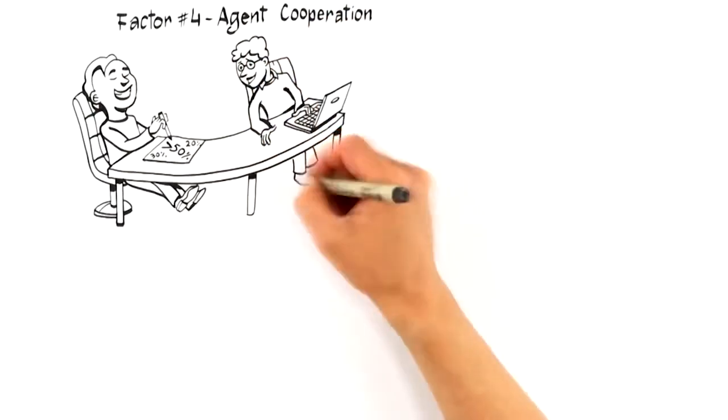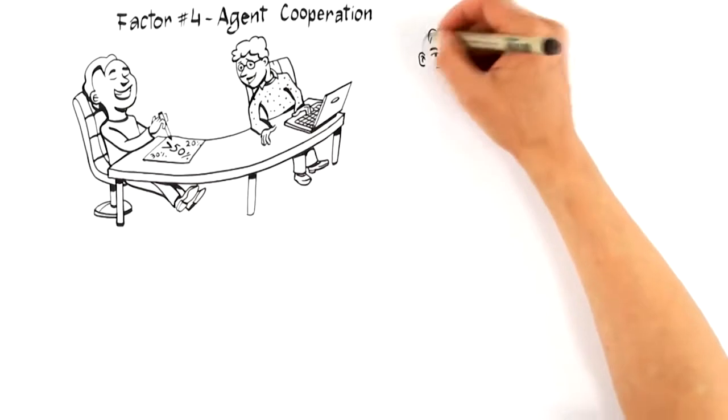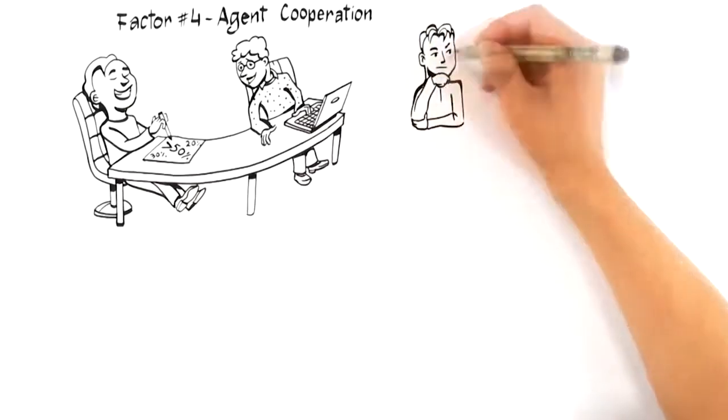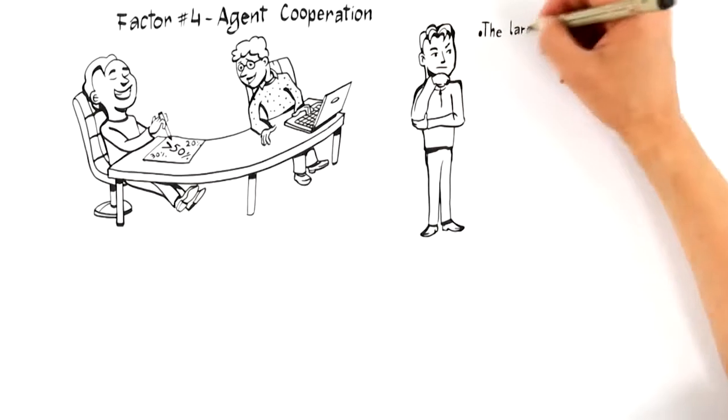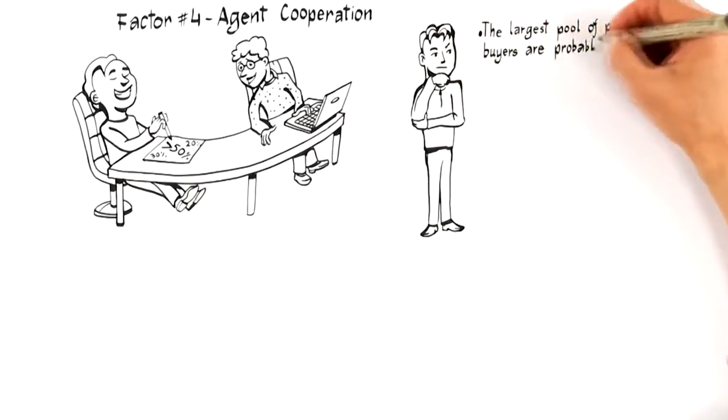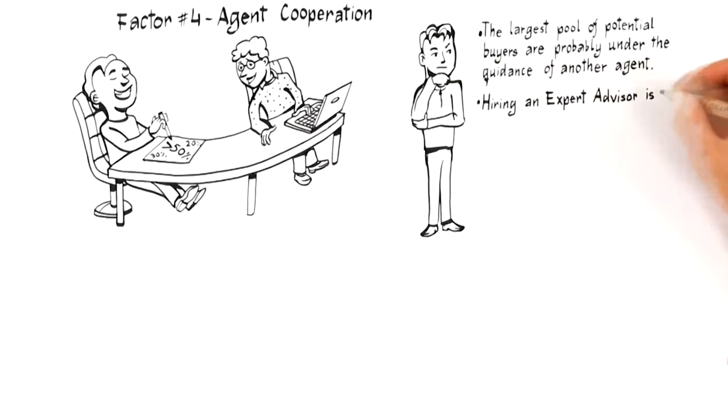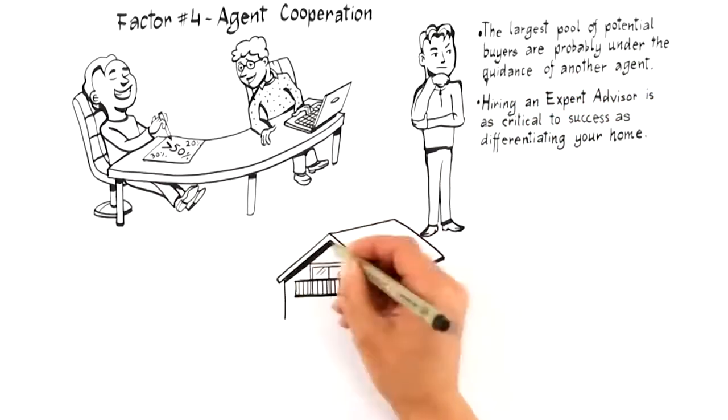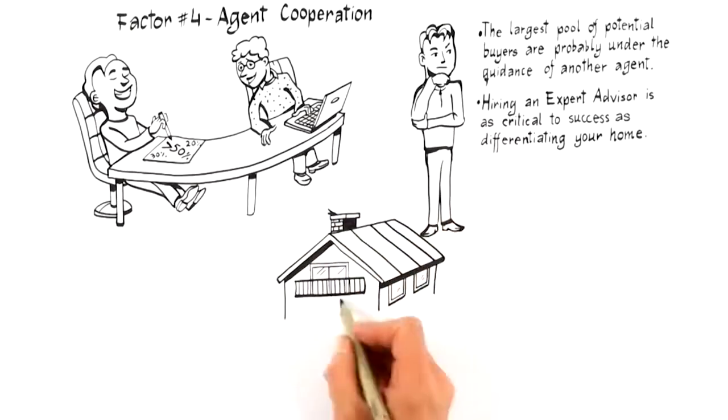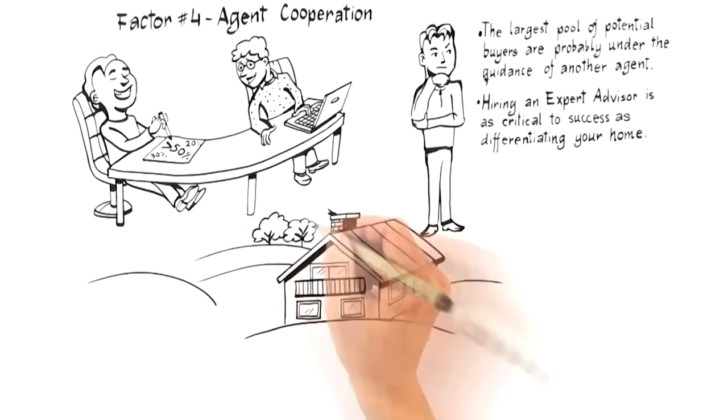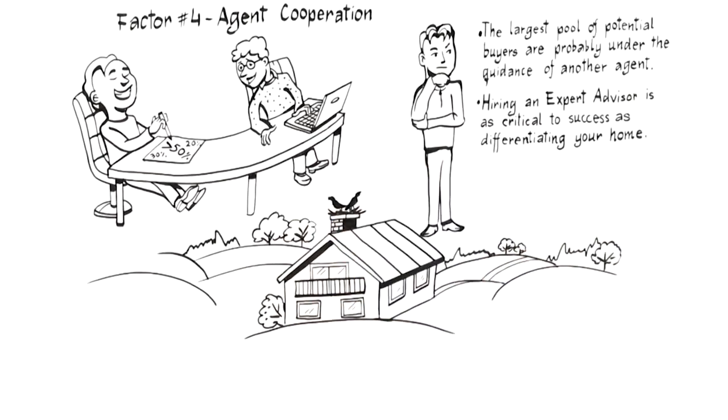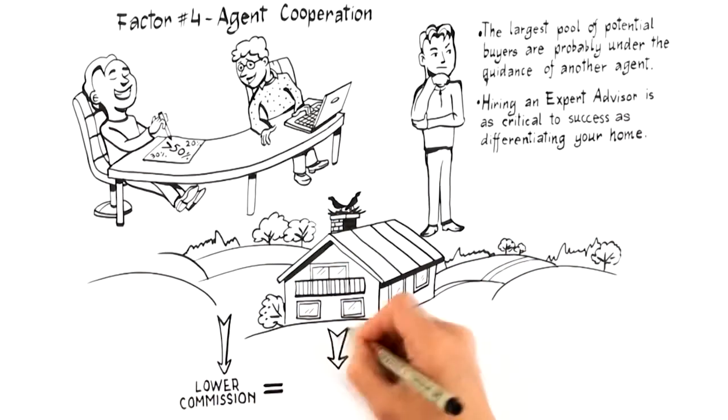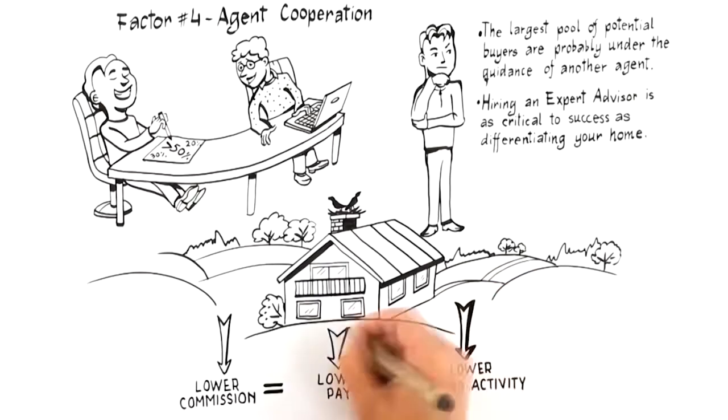Since the largest pool of potential buyers are probably under the guidance of another agent, it's critical that your expert advisor allocate a portion of their marketing budget to get your home in front of the top agents in the market who represent buyers. This means hiring an expert advisor who understands the current incentives that motivate other agents to bring their best clients is as critical to success as differentiating your home is to attract targeted buyers. Be wary of the agent that offers to accept lower commission. Often this leads to a lower compensation being offered to the agents that potentially have a buyer for your home, resulting in little to no activity on your house.